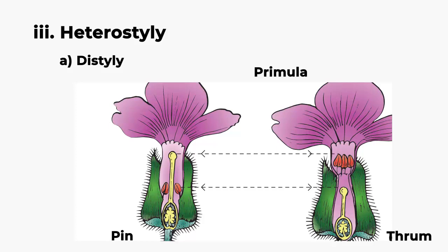Similarly, the anther of the thrumite and the stigma of the pin are at the same height. So pollination occurs between these two flower forms, not within the same flower.